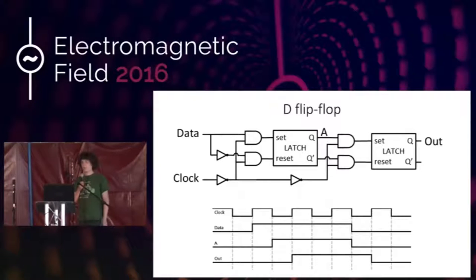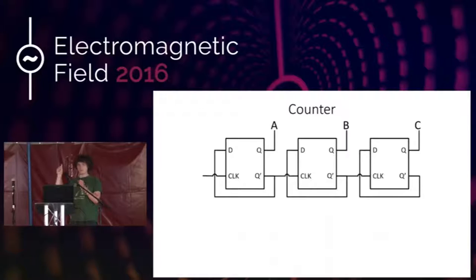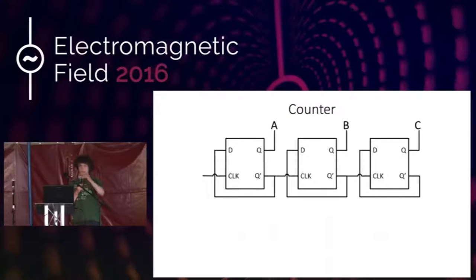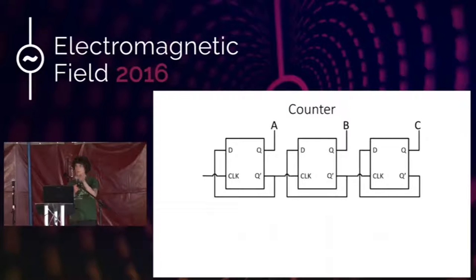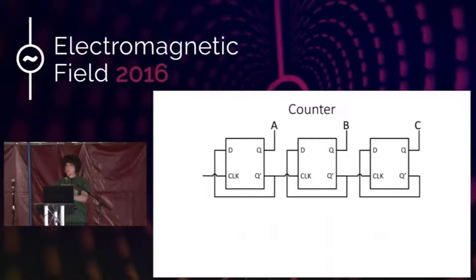This circuit is called a flip-flop. We can use it to make a counter: we connect the inverted output of each flip-flop to its own data input so that on every rising clock edge it toggles — if output was 1 it becomes 0, if 0 it becomes 1. We also connect this inverted output to the clock signal of the next flip-flop, so when the first flip-flop's output falls from 1 to 0, the inverted output rises from 0 to 1, triggering the second flip-flop to toggle.